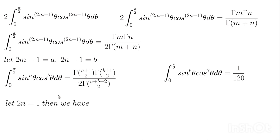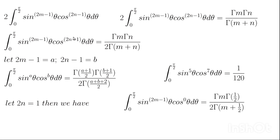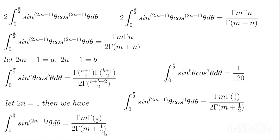If we also let 2n=1 — that is, wherever we see 2n we replace with 1 — then the cos^(2n-1)θ term becomes cos⁰θ = 1, simplifying the integral. Substituting n=1/2 wherever n appears in the gamma expression gives us a special reduced form of the beta integral involving only sinθ, which we can use to solve related problems.